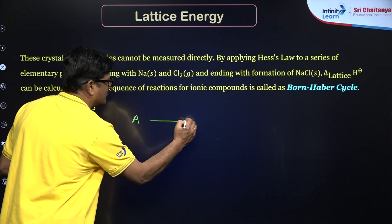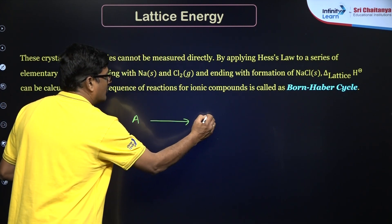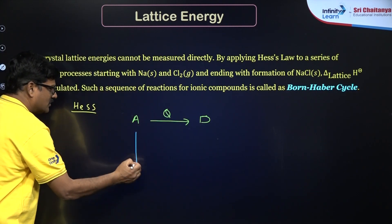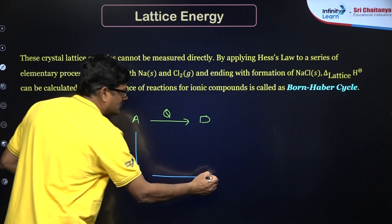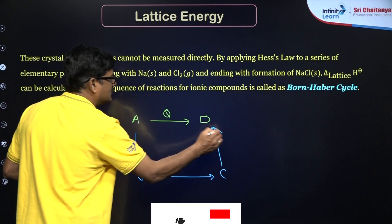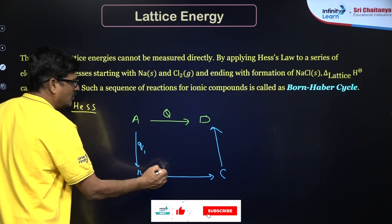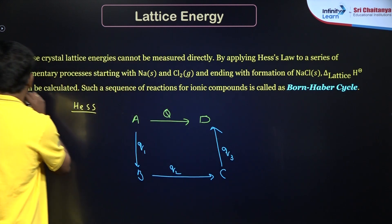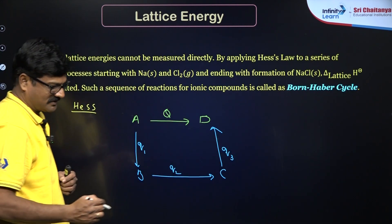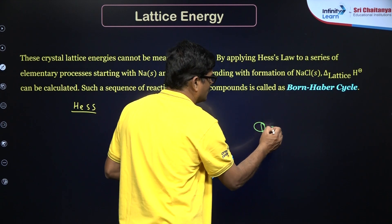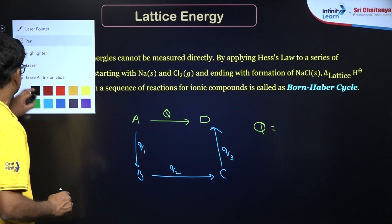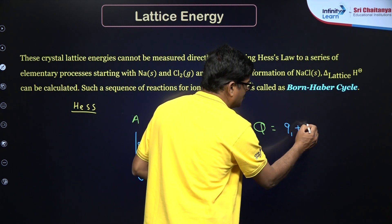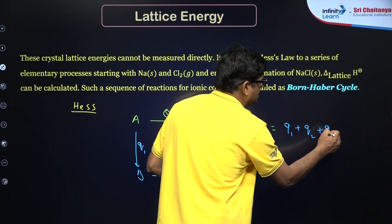Let us say A is converted into D by heat Q. Alternatively, A can be converted into B, B can be converted into C, and C can be converted into D. That requires Q1, Q2, and Q3 respectively. What Hess's Law of constant heat of summation says is: Q equals Q1 plus Q2 plus Q3. This is what is called Hess's Law of constant heat of summation.